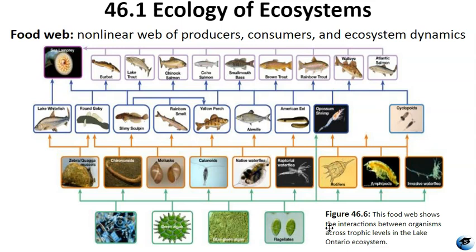A more accurate representation of an ecosystem is provided by food webs. A food web depicts the complex interactions among primary producers, consumers, and higher level consumers. Both structural models have strengths: food chains are flexible and used a lot for analytical modeling, while food webs better capture the ecosystem dynamics. Two main types of food webs exist — the grazing food web with plants at the base, and detrital food webs where the base is comprised of decomposers that break down organic matter. Most ecosystems integrate both types to recycle material from dead organisms. Figure 46.6 illustrates the complex ecosystem dynamics between organisms across trophic levels in Lake Ontario.